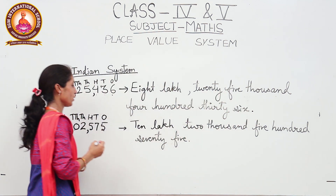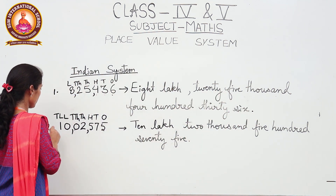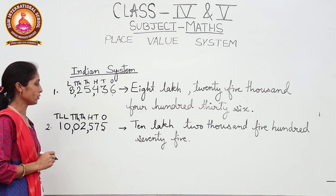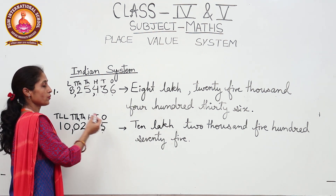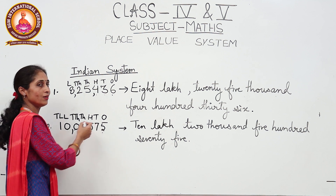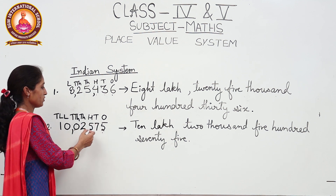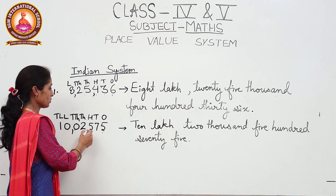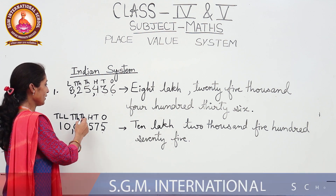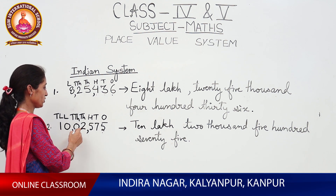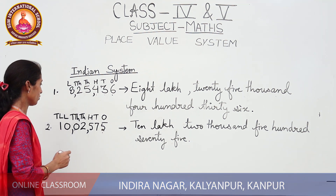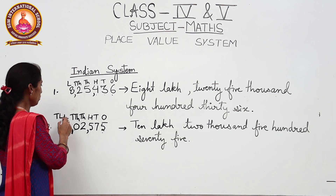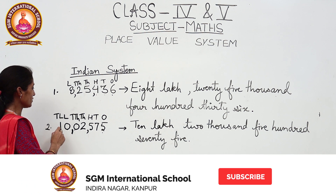Now we are going to take another example. Again we are going to put the commas in the number. Five is at the ones place, seven is at the tens place, and five is at the hundreds place, so we will put the first comma after the hundreds place — between two and five. Two is at the thousands place and zero is at the ten thousands place, and our next comma is after the ten thousands place.